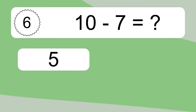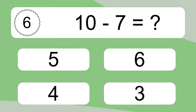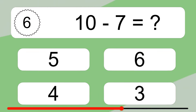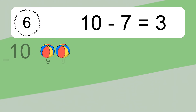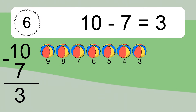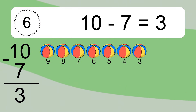10 minus 7 equals what? 10 minus 7 equals 3. Let's count it: 9, 8, 7, 6, 5, 4, 3.